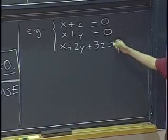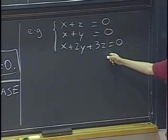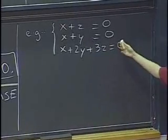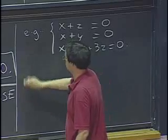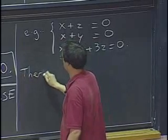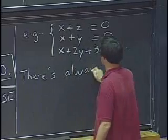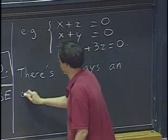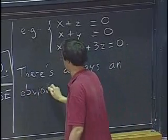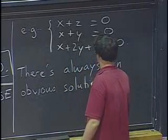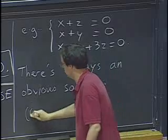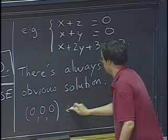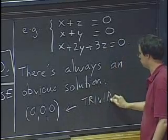Yeah, I think actually you already know a very simple solution to these equations. You can just take x, y, and z all to be zero. So, there's always an obvious solution, namely zero, zero, zero. And, in mathematical jargon, this is called the trivial solution.